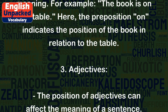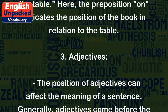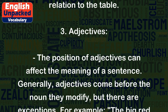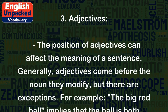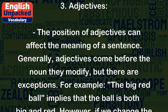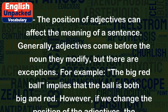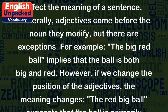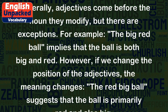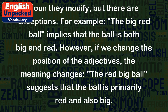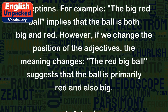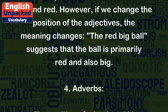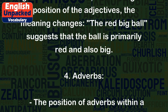3. Adjectives. The position of adjectives can affect the meaning of a sentence. Generally, adjectives come before the noun they modify, but there are exceptions. For example, the big red ball implies that the ball is both big and red. However, if we change the position of the adjectives, the meaning changes. The red big ball suggests that the ball is primarily red and also big.